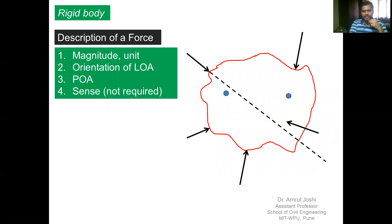Before moving towards the concepts in this lecture, let us understand what we mean by a rigid body. Consider a body of arbitrary shape marked by a red boundary, with two randomly picked points shown as blue circles. If under any magnitude and number of forces acting in any direction on this body, the distance between the two blue points remains unchanged, then we call the body a rigid body.